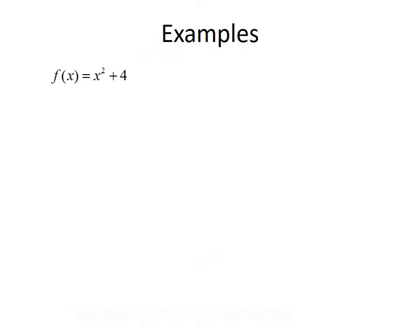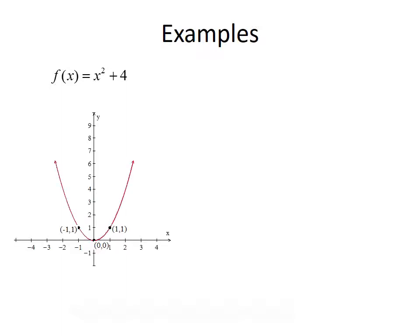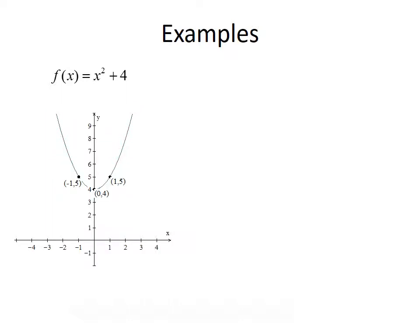Let's look at a couple of examples with vertical shifts. First, we want to use vertical shifts to sketch the graph f(x) = x² + 4. We'll start with the graph of f(x) = x², one of the functions from our library of functions — it looks like a parabola. Since the function adds 4 to x², we're going to shift the graph of x² up by 4. The graph of x² + 4 is the green parabola, with points (-1, 5), (0, 4), and (1, 5), which correspond to points on x².